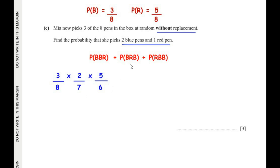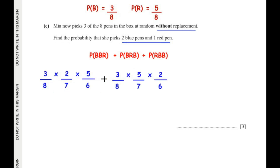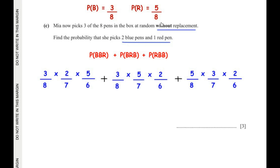Now for the blue, red, blue combination: the first pick is blue at 3 over 8, the red is 5 over 7, and then blue reduces by 1 so it becomes 2 out of 6. For the last combination — red, blue, blue: the first pick is red at 5 over 8, the second pick is blue at 3 over 7, and the third pick is blue again so it becomes 2 out of 6 total pens.